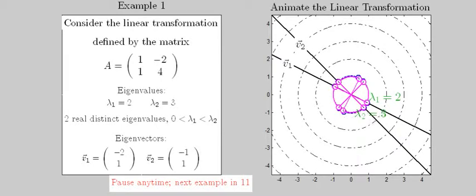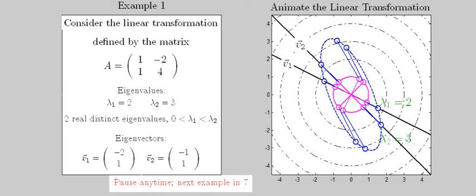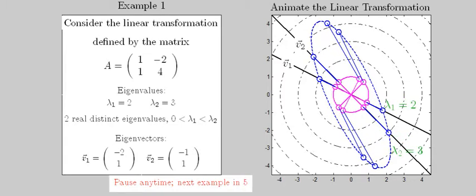The first example in this video has two distinct real and positive eigenvalues. Because they're positive, the transformed image is larger than its pre-image, more so along the dominant eigenvalue's direction.